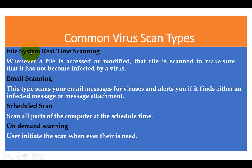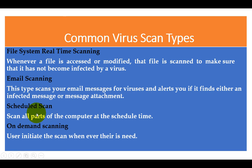Common virus scan types: File System Real-Time Scanning — whenever a file is accessed or modified, the file is scanned to make sure there is no virus. Email Scanning — email and the web are places where our system can easily be damaged by viruses, worms, or malware. This scan type checks your email messages for virus alerts. Schedule Scan — if you want to do an external scan at a particular time, you can use a scheduled scan. On-Demand Scan — whenever a user needs a scan, it can be initiated by the user.